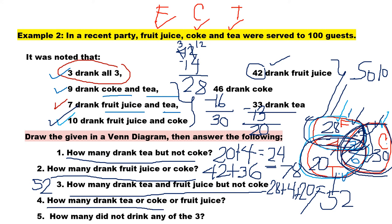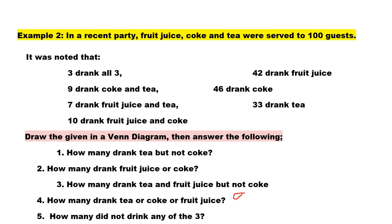Question number 4: how many drank tea or Coke or fruit juice? That includes everyone in all three circles. We take the fruit juice total of 42, then add the remaining Coke values — 30 plus 6 — and the tea-only value of 20. This gives us 98. And if the question is how many did not drink any of the three, we subtract: 100 minus 98, which gives us 2. That is the number of guests who did not drink any of the three beverages.